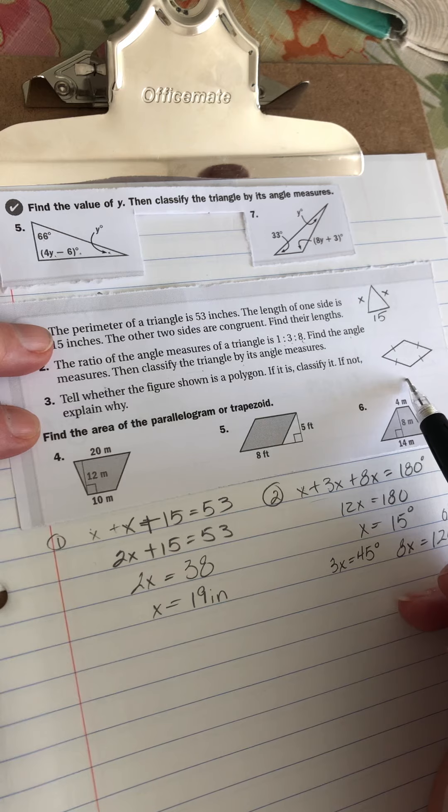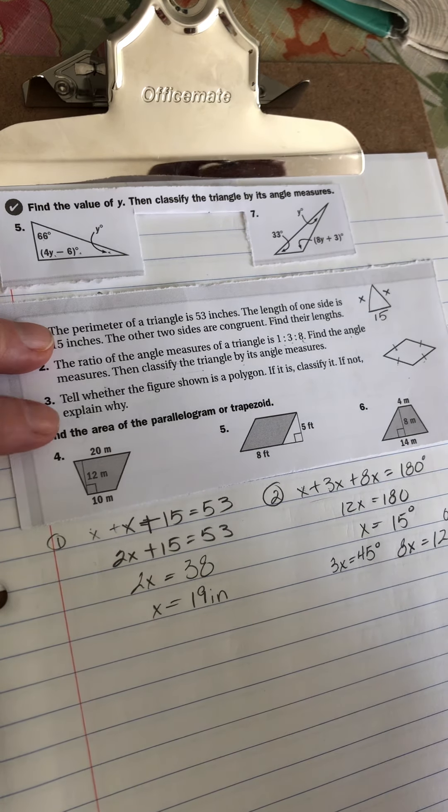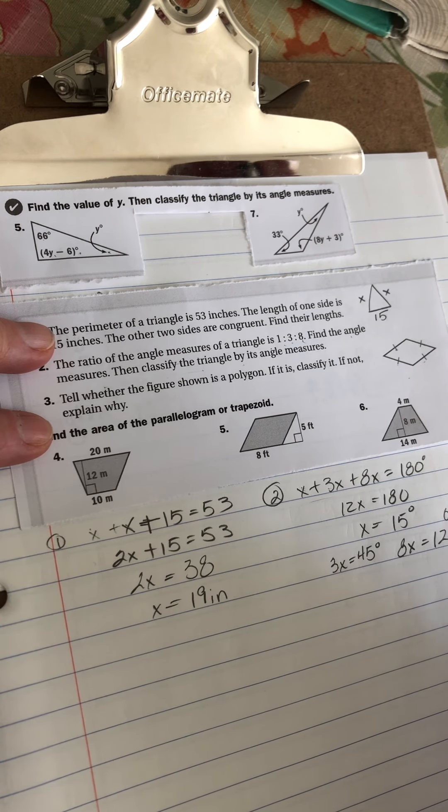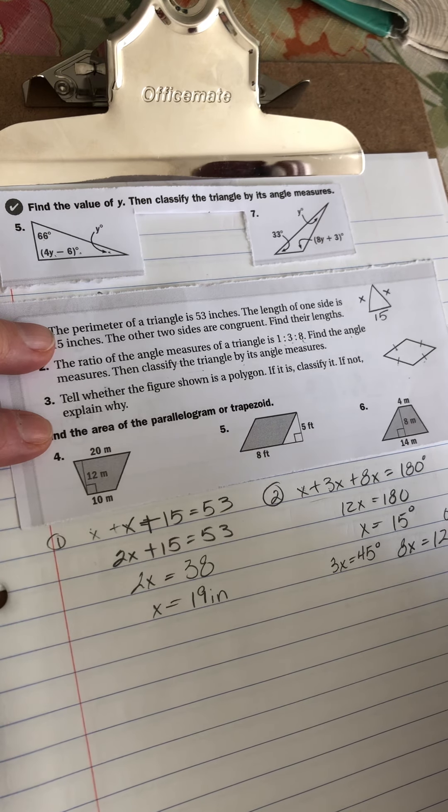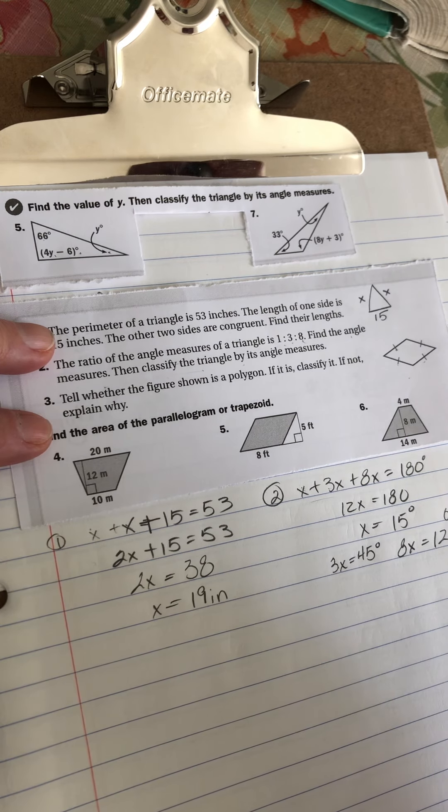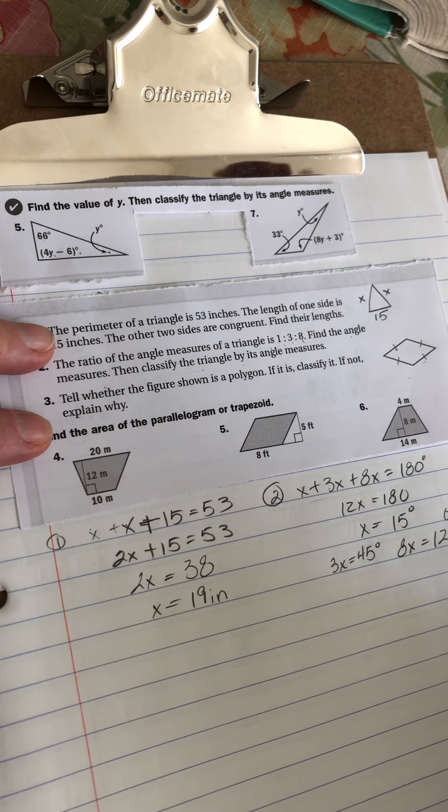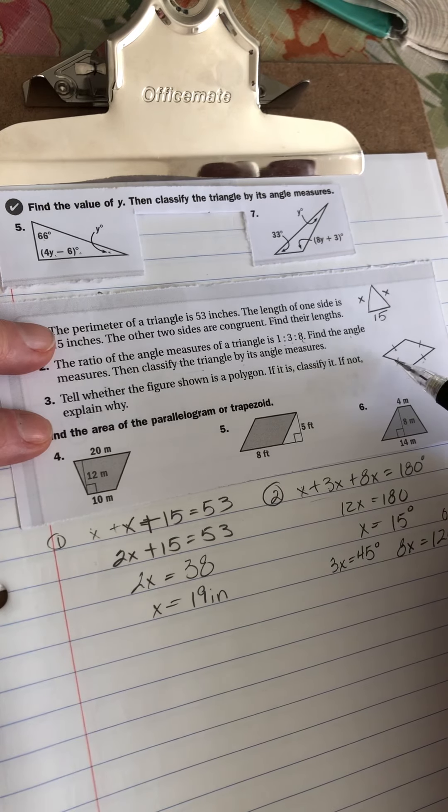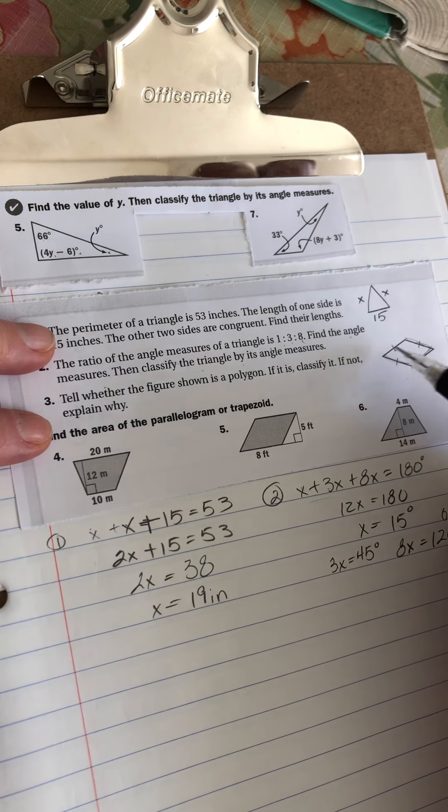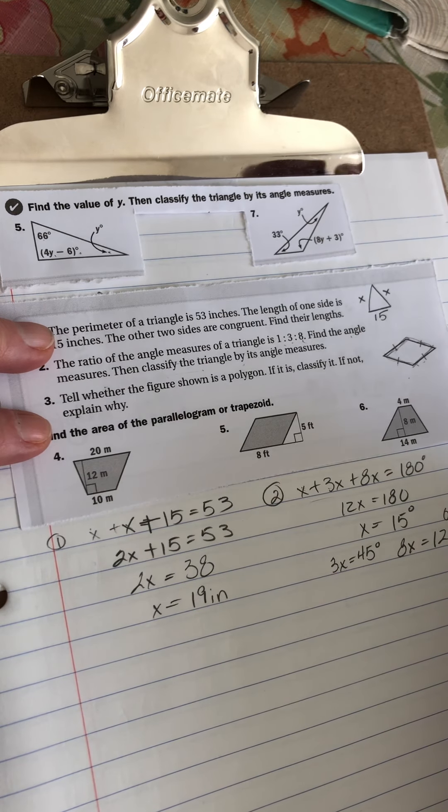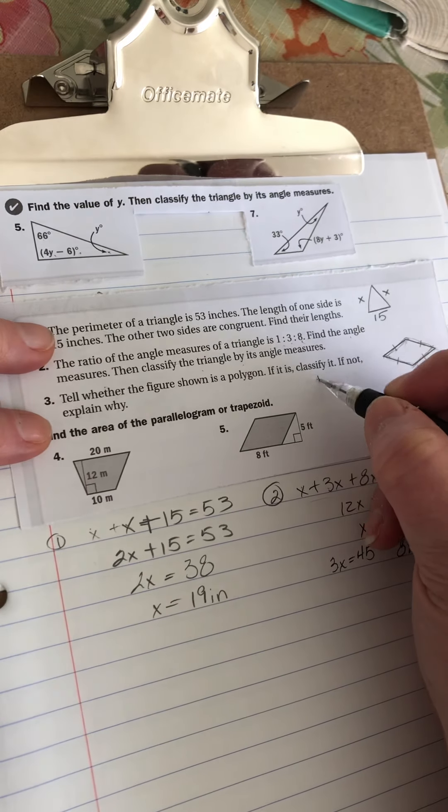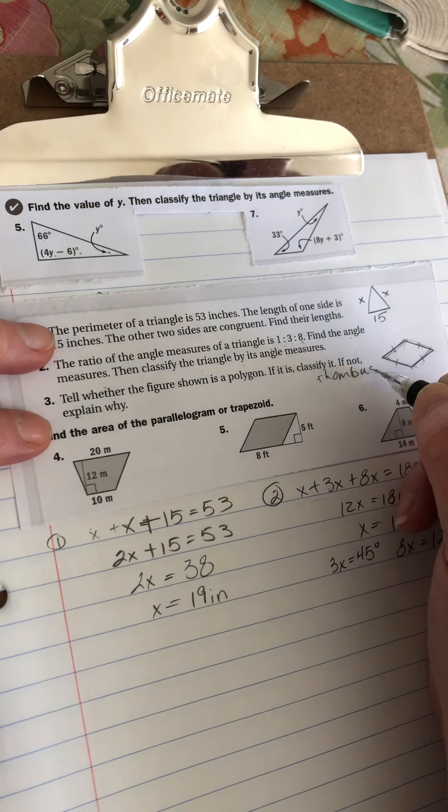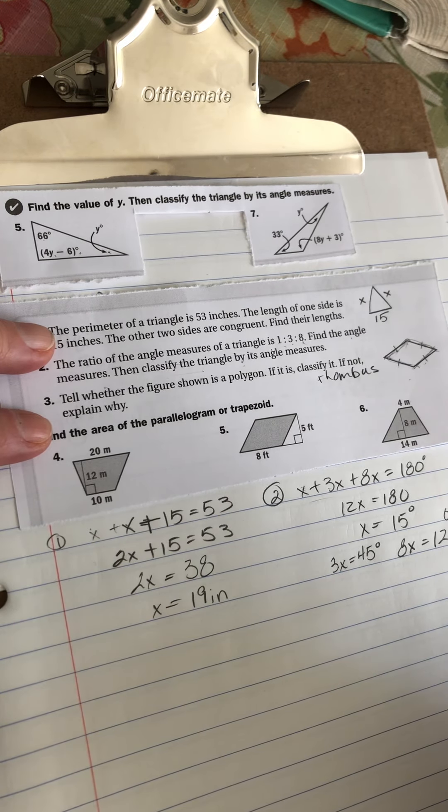Now, number three looks at this shape. It's got tick marks on each side. It says tell whether the figure shown is a polygon. If it is, classify it. If not, explain why. Well, it's a closed figure. All of its sides are line segments. And they're all congruent. Now, because they're congruent, that means that they have to be parallel. Now, we don't know anything about the angles, except we can probably assume that since these two are going to be parallel, and these two are going to be parallel, that the acute angles are going to be congruent, and the obtuse angles are congruent. But it's a rhombus. It's the only thing it could be.